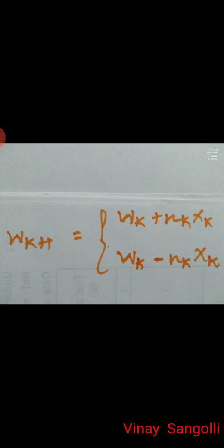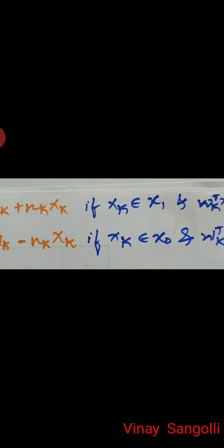This equation comes into picture only when we have misclassified data, and it is only applicable to linearly separable data sets. All these things are discussed with respect to a binary threshold neuron. Let us assume the cross marks are class X1, the circles are class X0, and X(K) is the total data set. If a new incoming data point belongs to X(K) or X1, we handle it accordingly.